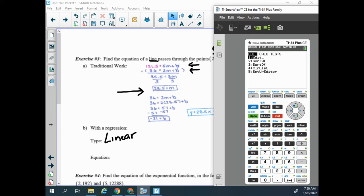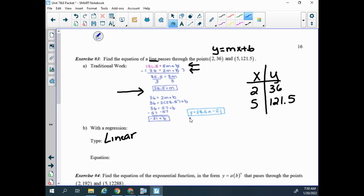Then I go to my stat, calc, and number four is linear regression. So I pick that one. My L1 and L2 are pasted, and I can calculate it. So if I look at this equation, the a value is 28.5, which is what I saw from my algebraic method, and my b value is negative 21. So I see that it gives me this same equation.